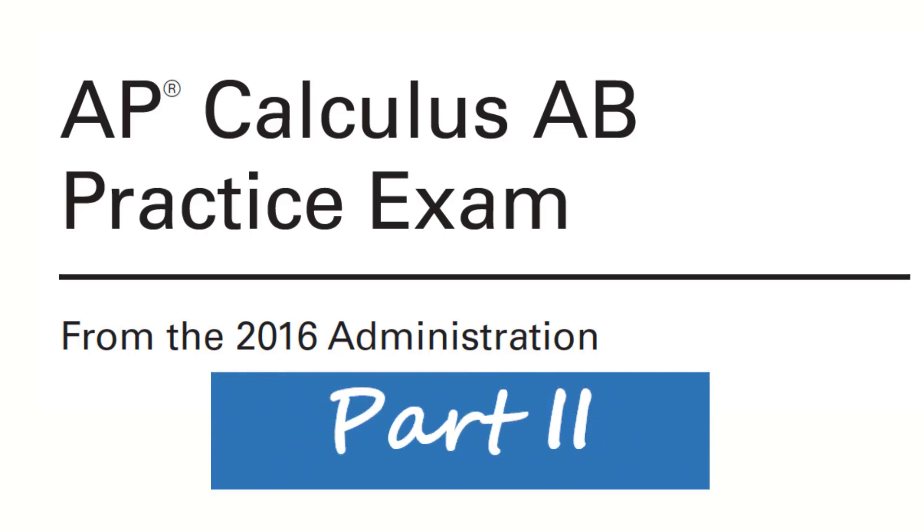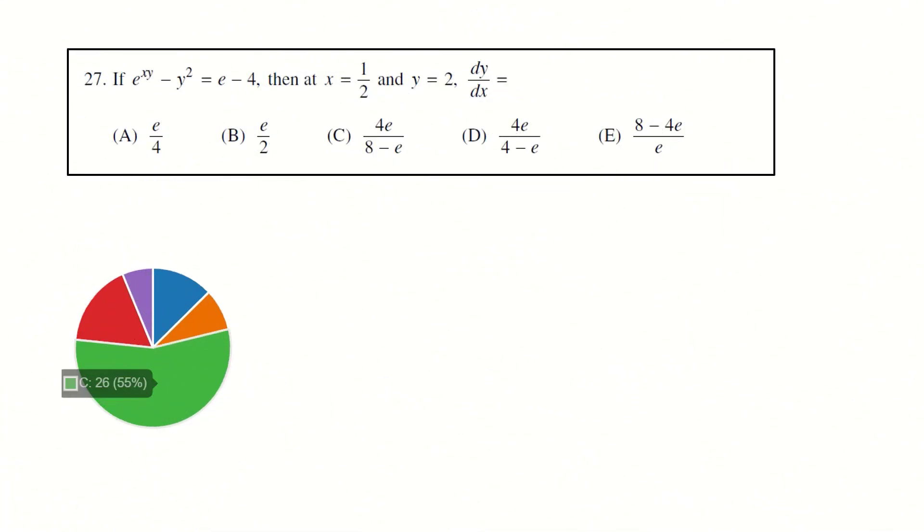For today's lesson, we are looking at some multiple choice questions from AP Calculus AB 2016. These are not so well done questions. Now let's continue on question 27. This is about implicit differentiation: e to the xy minus y squared equals e minus 4.